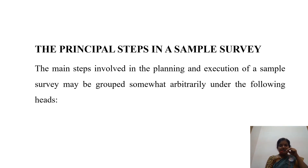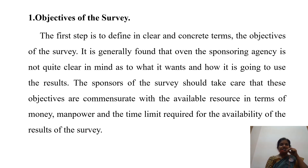The principal steps in a sampling survey are presented here. The main steps involved in the planning of a sampling survey are as follows. First, objectives of the sampling survey: the first step is to define in clear and concrete terms the objectives of the survey. It is generally found that when the sponsoring agency is not quite clear as to what it wants and how it is going to use the survey results, problems arise. The responses of the survey should take care of these objectives within the available resources in terms of money, manpower, and time. These three points — money, manpower, and time — are very important for sampling theory.